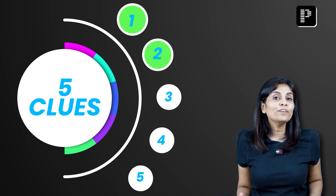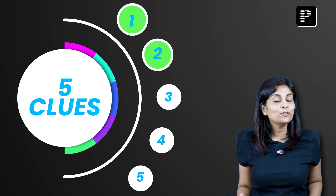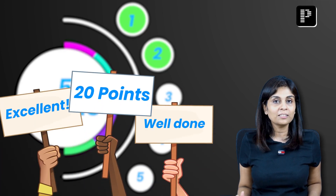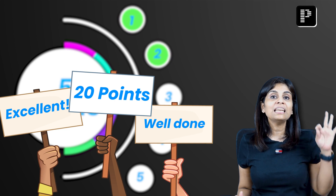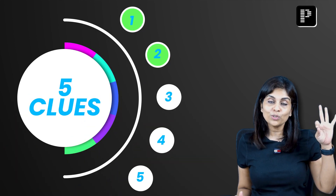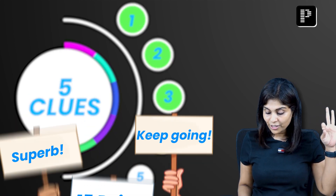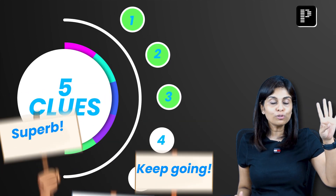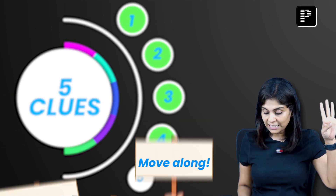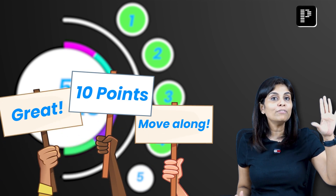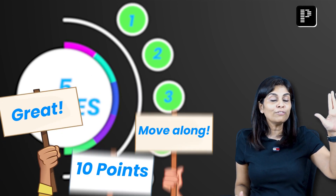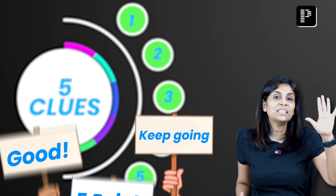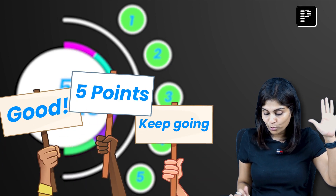At this point, if your answer happens to be right, then you get 20 points. If you need three clues to give the right answer, then you get 15 points. Four clues, then you get 10 points. Even if you need all five clues to find out the right answer, you still get five points.